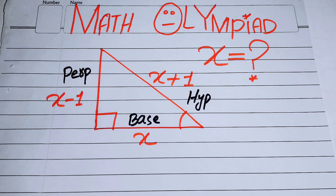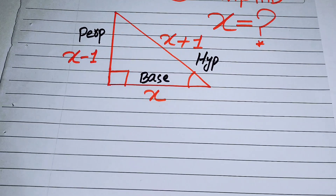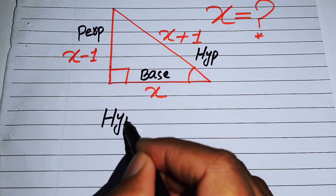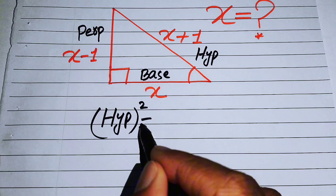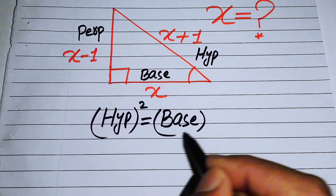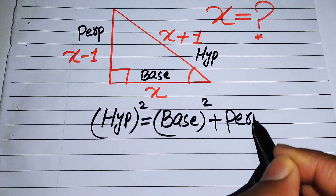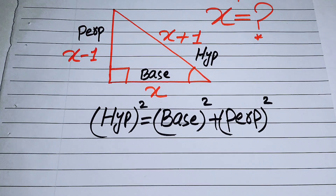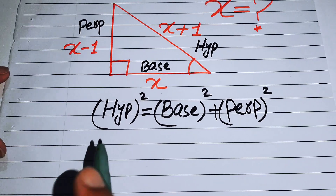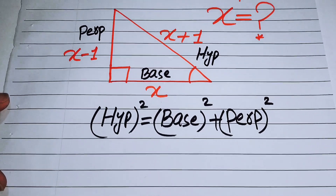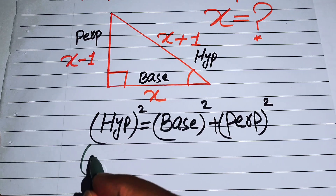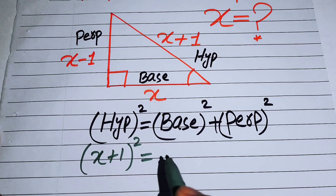To find the value of X, we need to use the Pythagorean theorem, which states: hypotenuse squared equals base squared plus perpendicular squared. We substitute the values from our triangle: the hypotenuse is X plus 1, so we write (X + 1)² on the left-hand side.